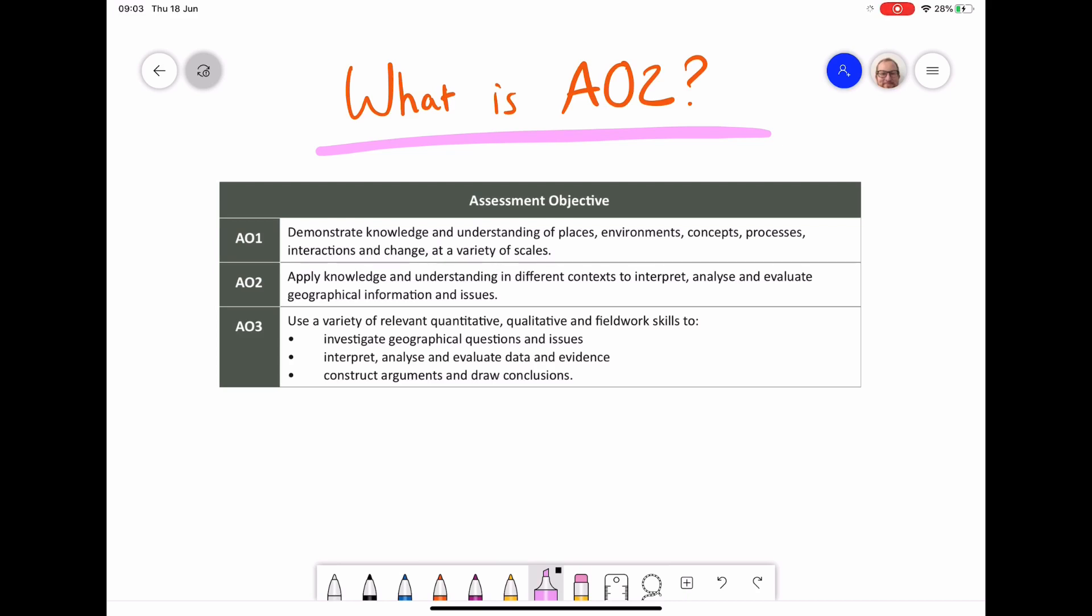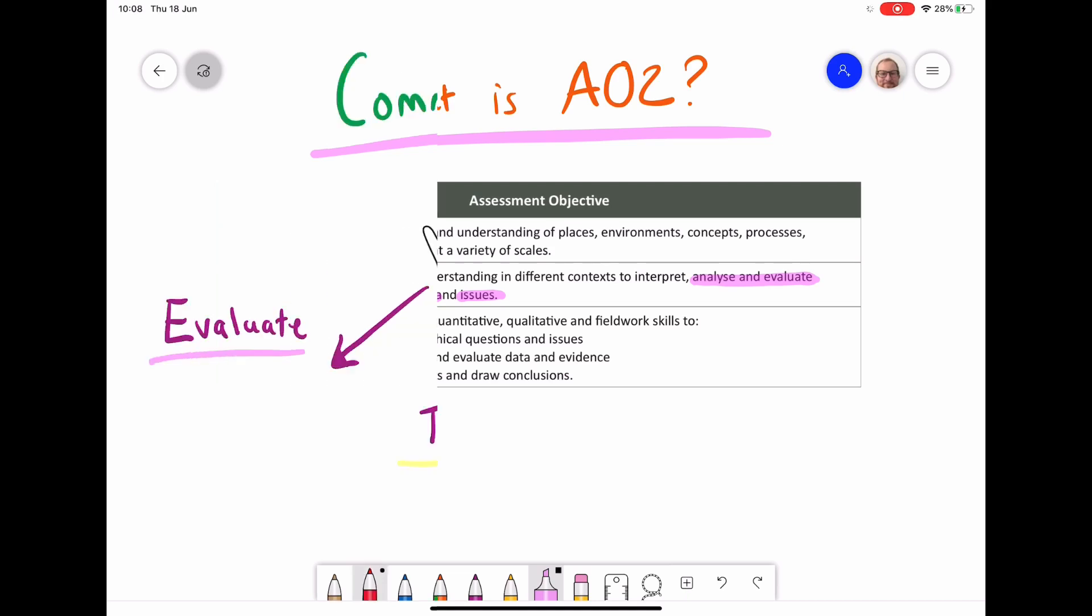we need to know actually what it is. So where AO1 is demonstrating knowledge, AO2 is applying this knowledge. It's also where you get that knowledge and you are using it to analyze and evaluate an issue or some information that you've been given. So it's not just about saying what you know, but it's how you can use the knowledge that you've gained.